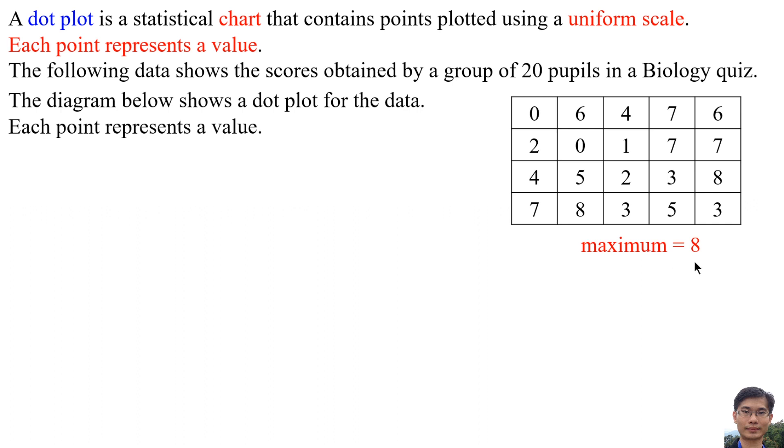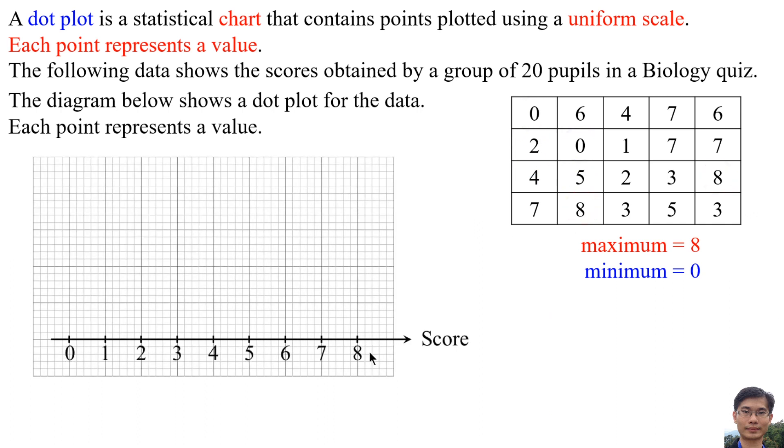We know that the maximum is 8 and the minimum is 0. So the minimum value of x-axis is 0, maximum is 8. The label for x-axis is score. There is no y-axis in dot plot, so we need to plot all the data into the graph.